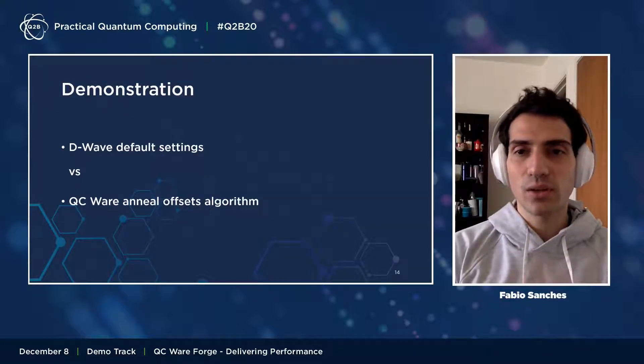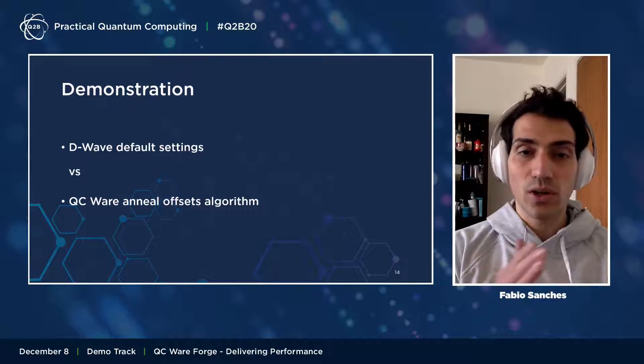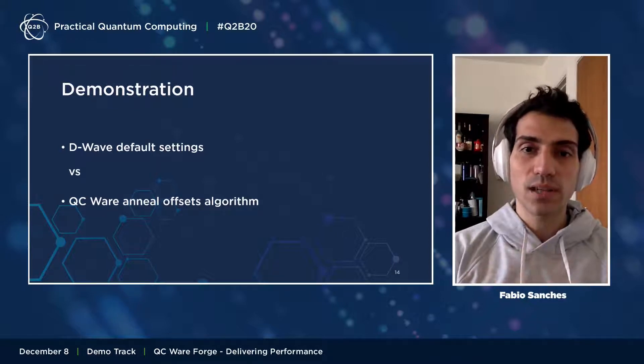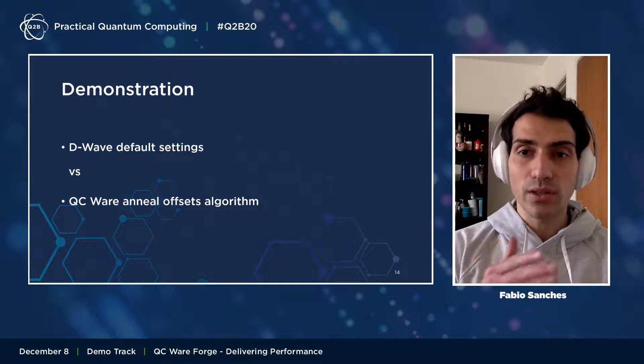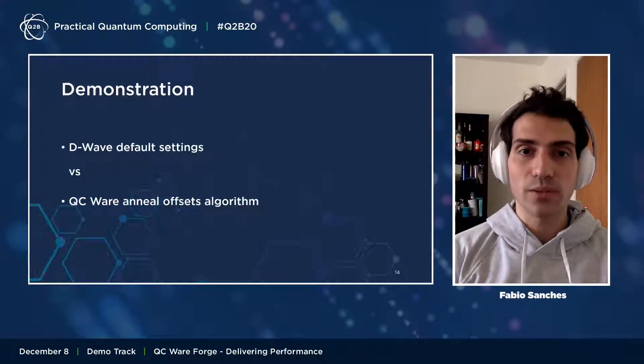As you can see, not only is our annealing offsets algorithm easy to use, but for certain problems it can really improve the success probability on D-Wave.